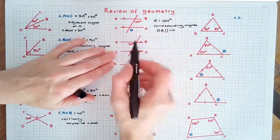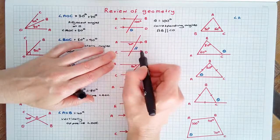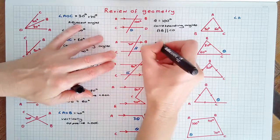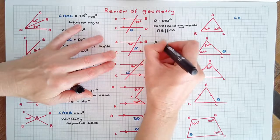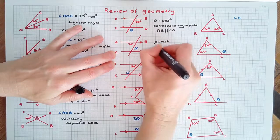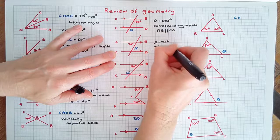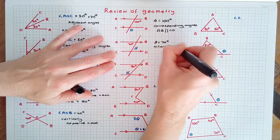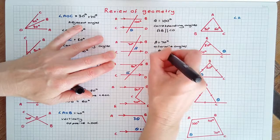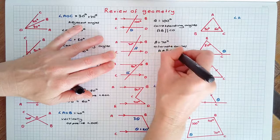Since these lines are also parallel, the alternate angles are equal. So beta equals 70 degrees because of alternate angles about parallel lines AB and CD.